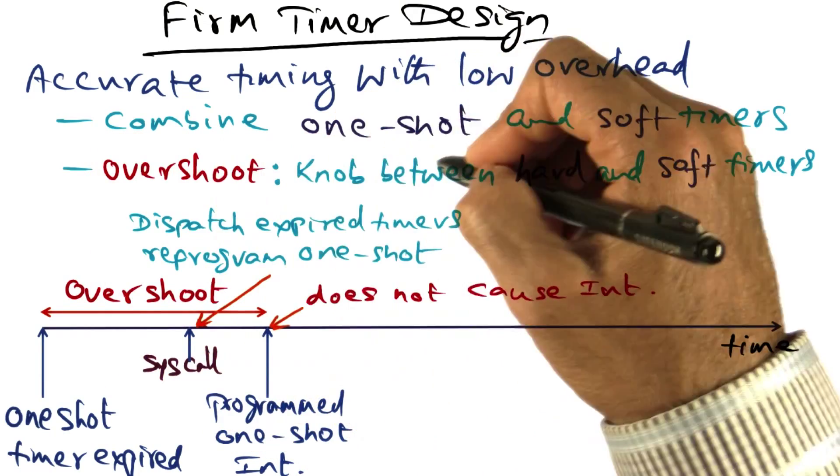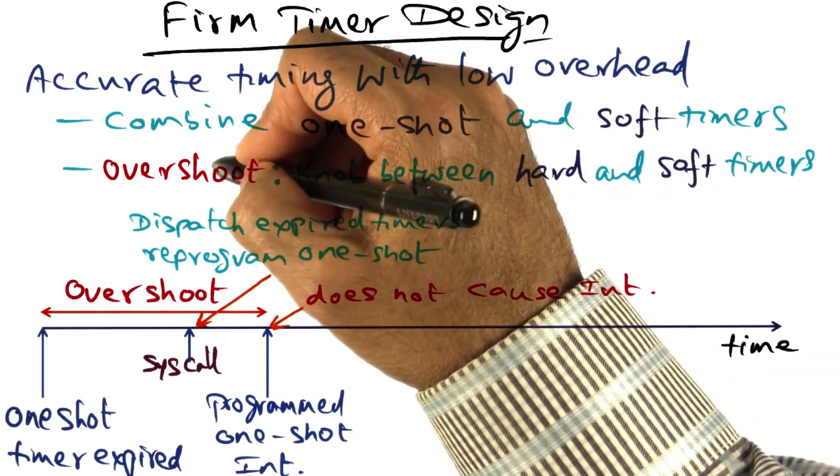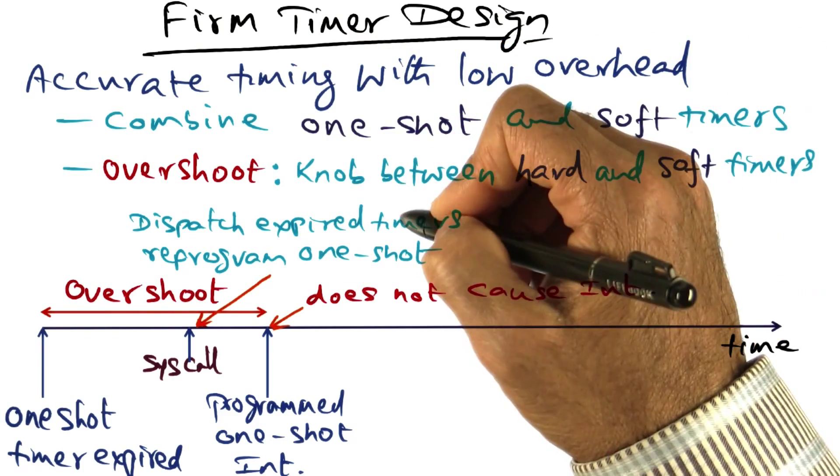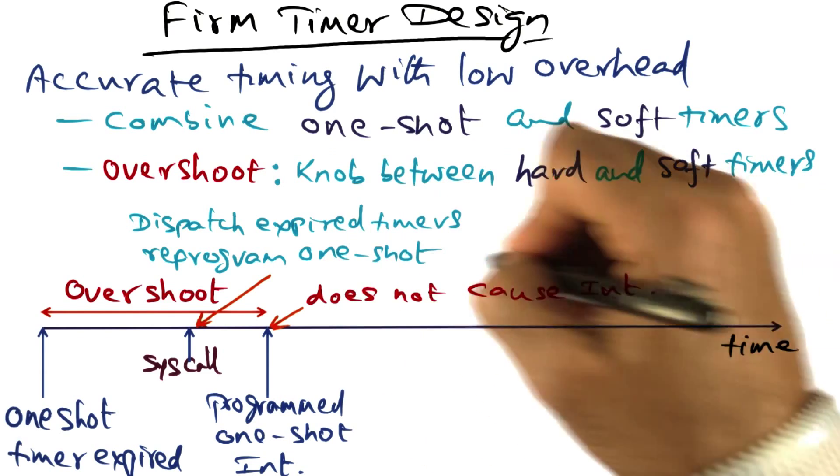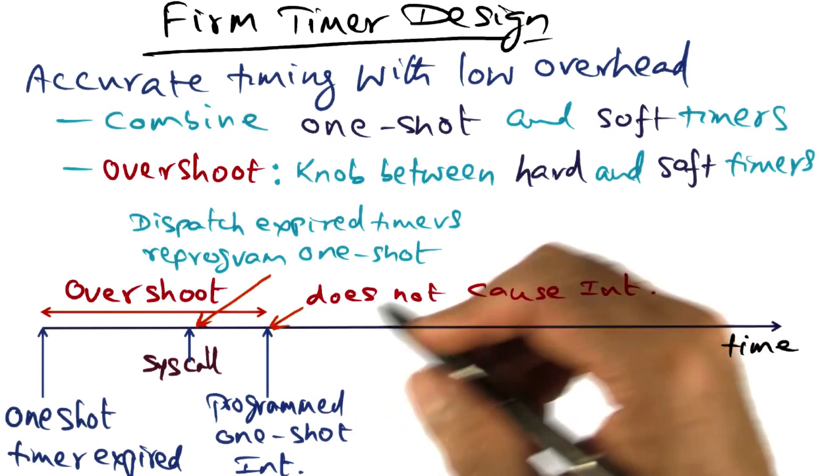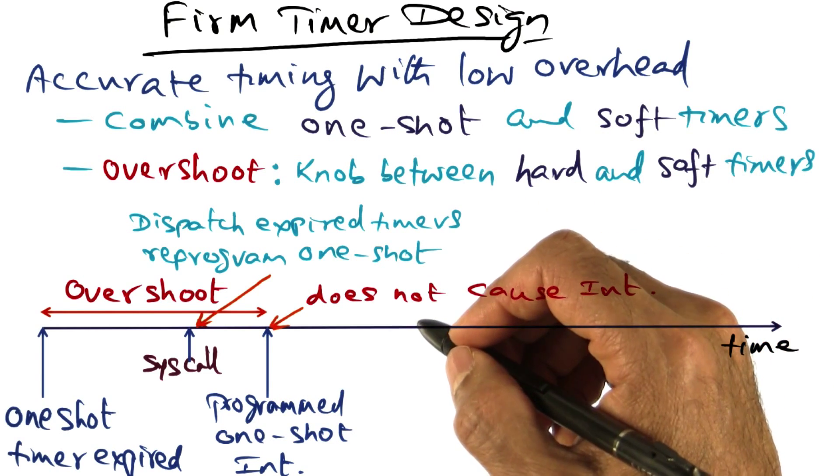But the hope is that by choosing this knob appropriately between hard and soft timers, we can make sure that we reduce the number of times we get this one shot timer interrupts actually occurring.